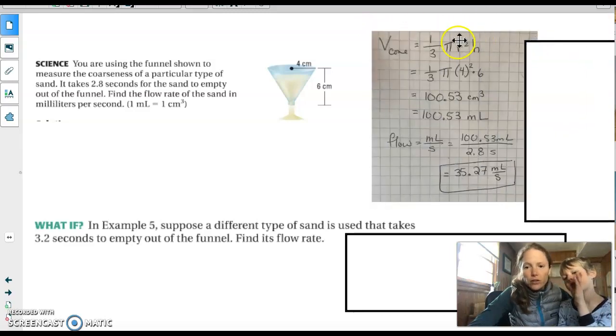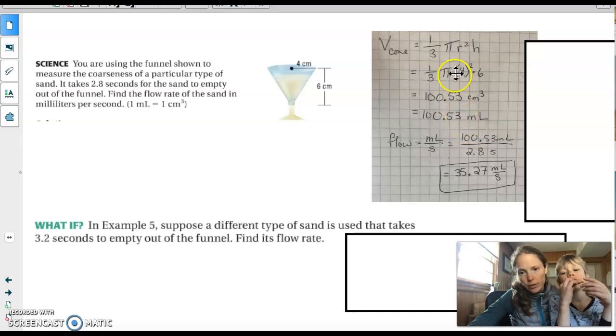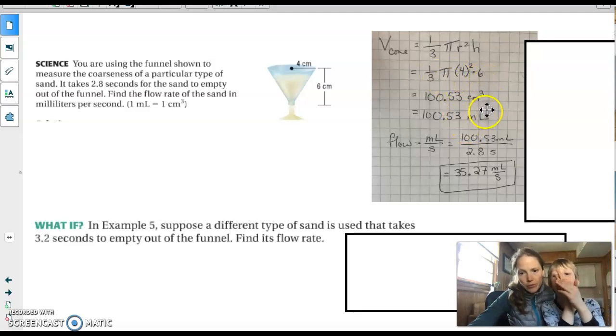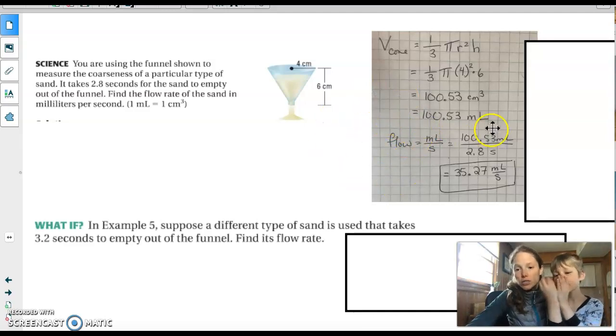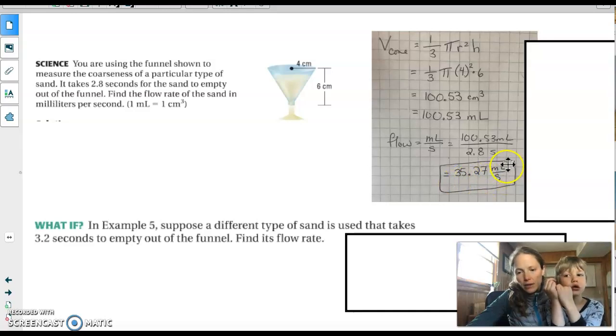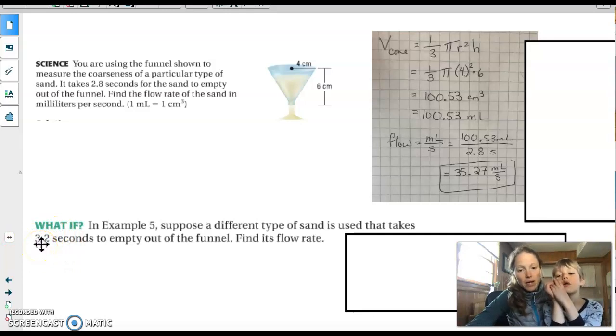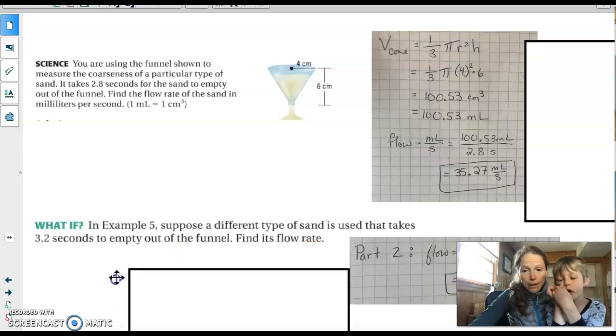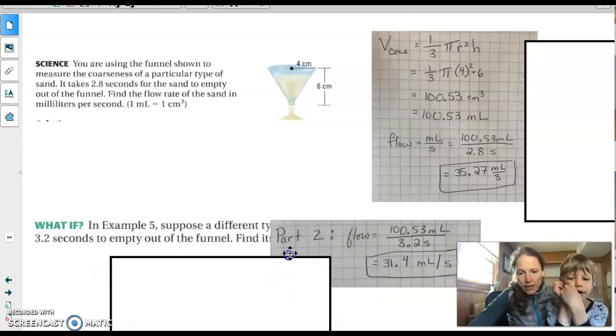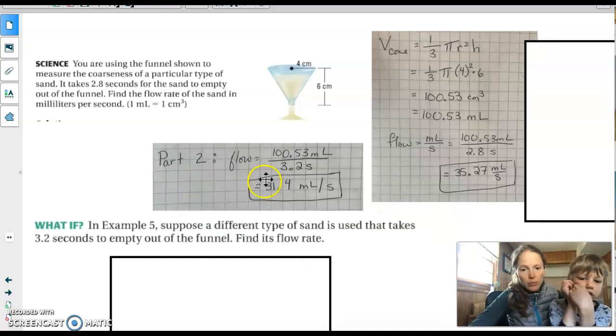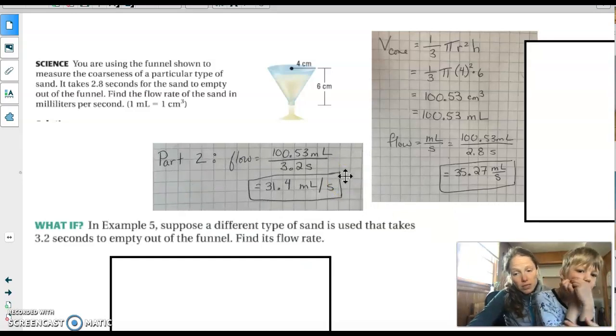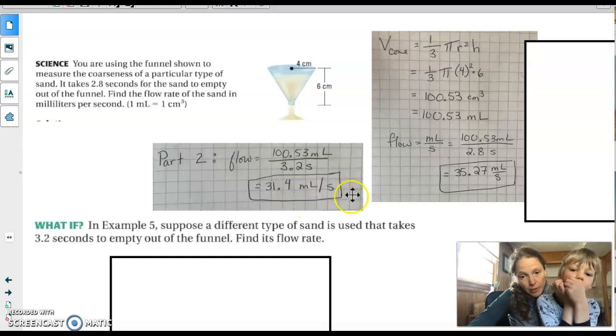And then if we look at it, our volume calculation is pretty straightforward, 1 third base times height to find the volume. But then again, for this flow piece, we're just taking that volume, dividing by the time, and then we're going to get that rate of flow in milliliters per second. This second one is just a follow-up, and it's just talking about if the time was a little bit longer. If we use a different kind of sand that took a little longer to come out of the funnel, what would its flow rate be? And if we do that out, we would see that that rate would be a little bit lower because it's taking longer at 31.4 milliliters per second.